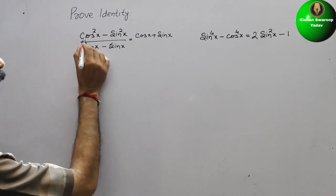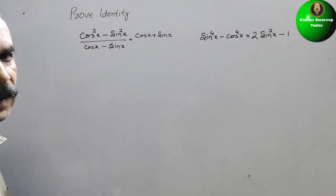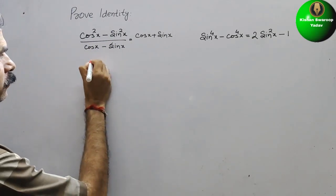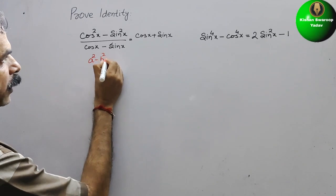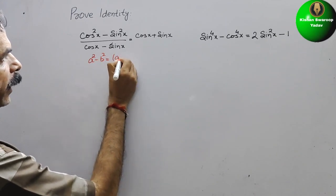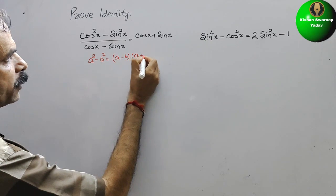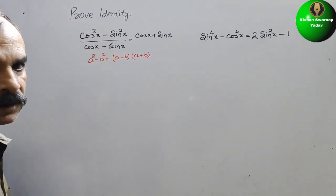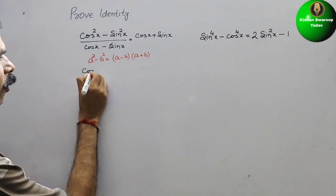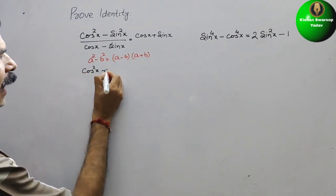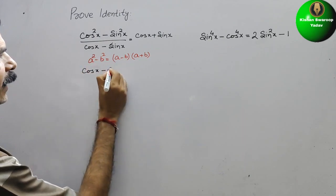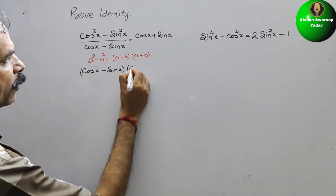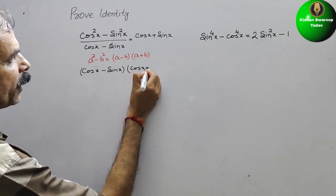You can see here cos squared x minus sin squared x. It is in the form of a squared minus b squared, which is equal to a minus b and a plus b. So in this form we have to write this. It will come as cos x minus sin x, and cos x plus sin x.